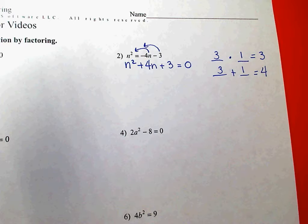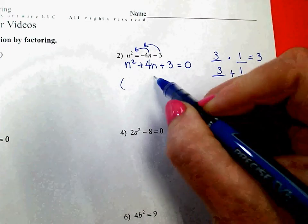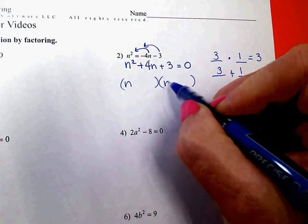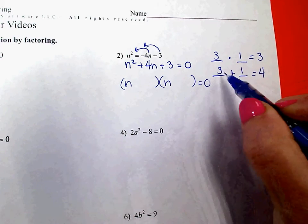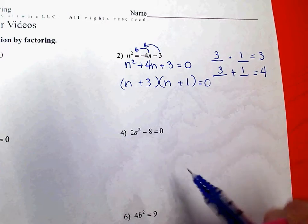So when I factor this into the two sets of parentheses, the numbers that I'll put in the parentheses with the n's are 3 and 1. n squared is n times n, and my numbers of positive 3 and positive 1.